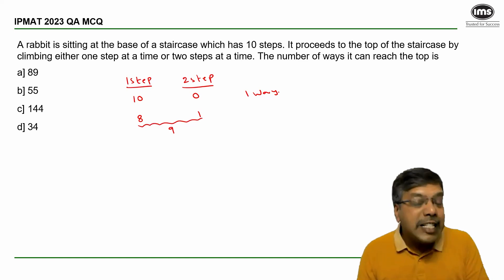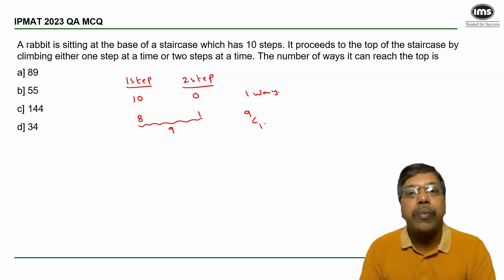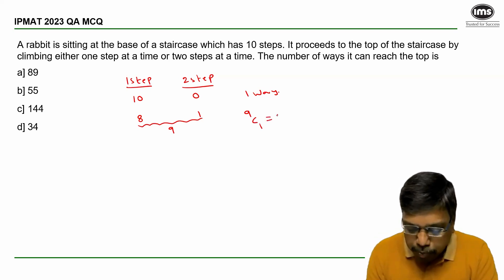So out of these nine jumps, which one is the double one? It can be the first or second or third and so on. So number of ways of selecting one jump from nine to make it a double step is 9C1, which is equal to 9 ways.